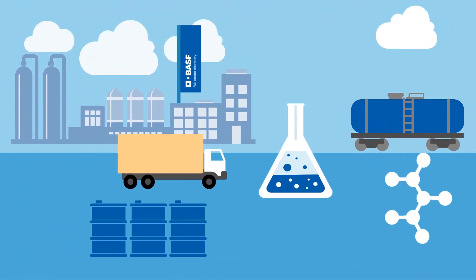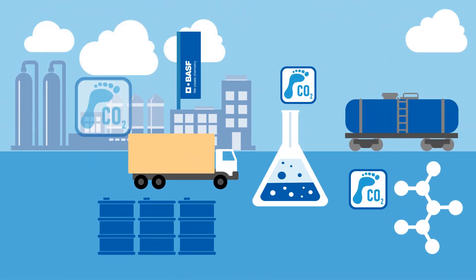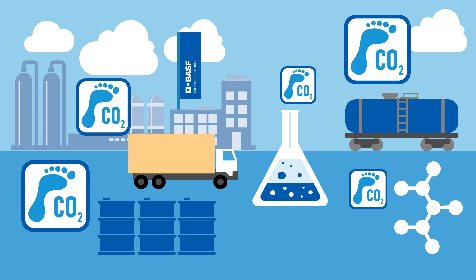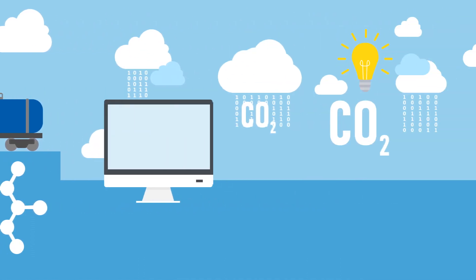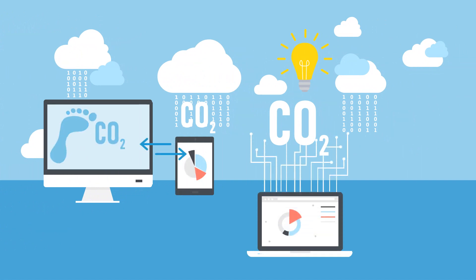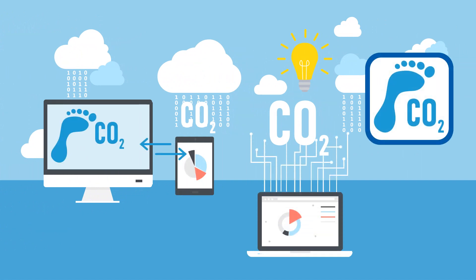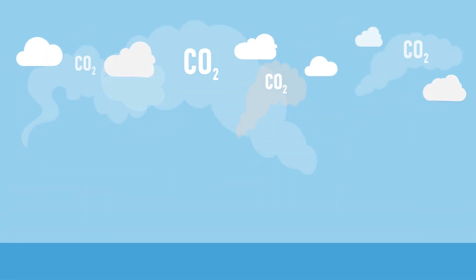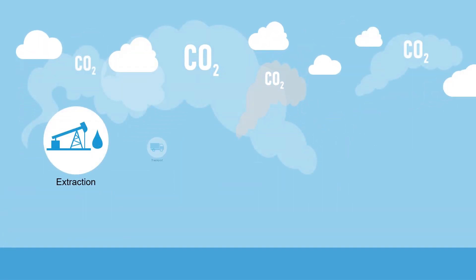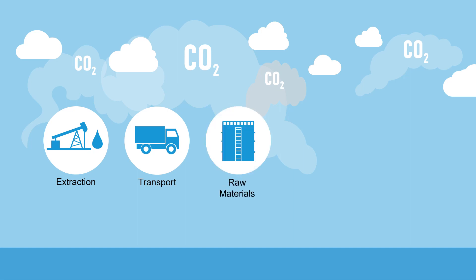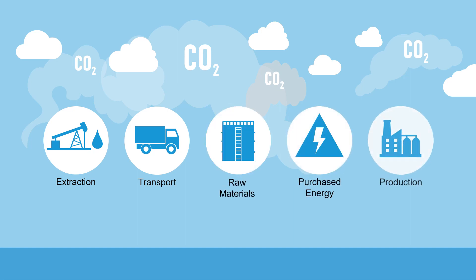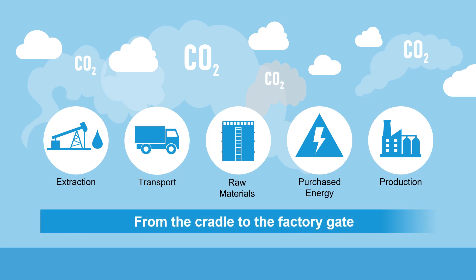We want to improve CO2 transparency in our value chains, from the raw materials we buy to our factory gates. That's why we calculate the carbon footprints for our sales products worldwide — the product carbon footprints. The calculation follows general standards of lifecycle analysis. It is based on the greenhouse gas emissions of the company's own production facilities and those of purchased raw materials and energy, from the cradle to the factory gate.